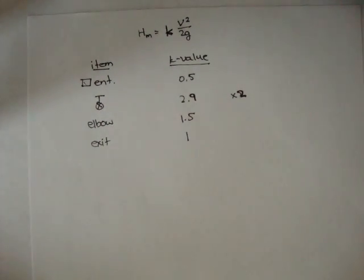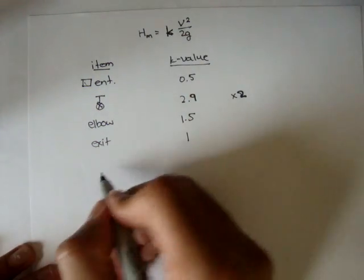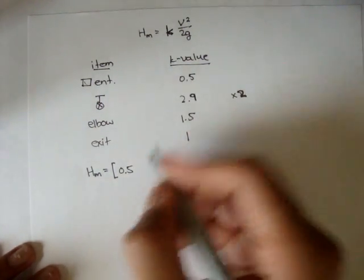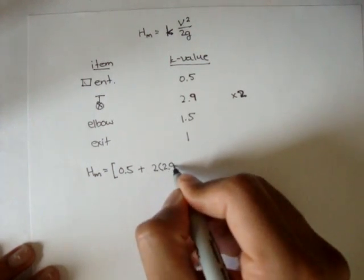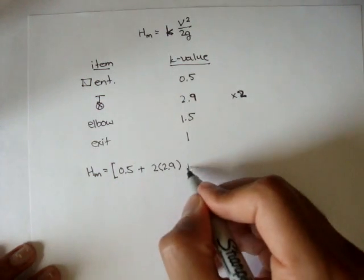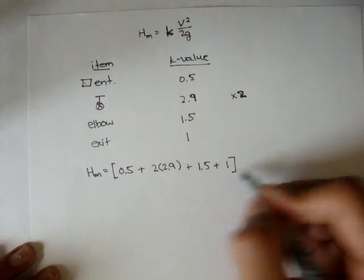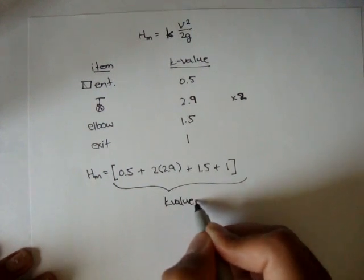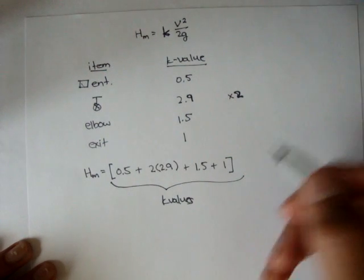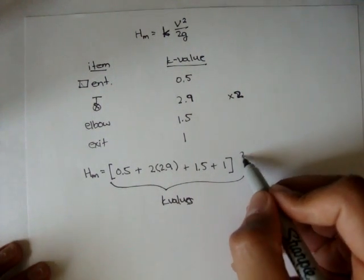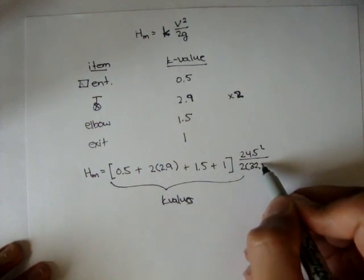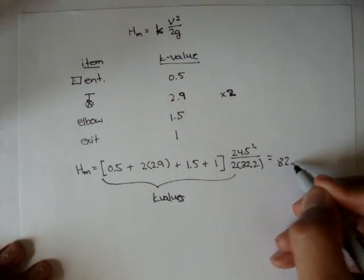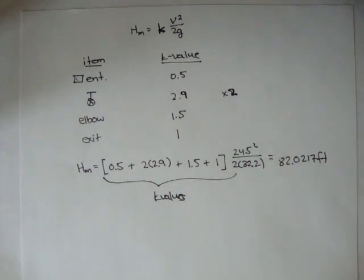So if we take these k values and plug it into this formula to find the minor losses, we can say the h minor is going to be all of the k values, so 0.5 plus 2 times 2.9, right, because there's two fully open check valves, plus the 1.5 for the elbow, plus the one for the exit. And the velocity - so this is all the k values, minor loss coefficients - and we multiply that by v squared over 2g, and the v squared over 2g is 24.5 squared over 2 times 32.2. And if we solve all this out, we get that the minor losses are 82.0217 feet. That's the minor losses.